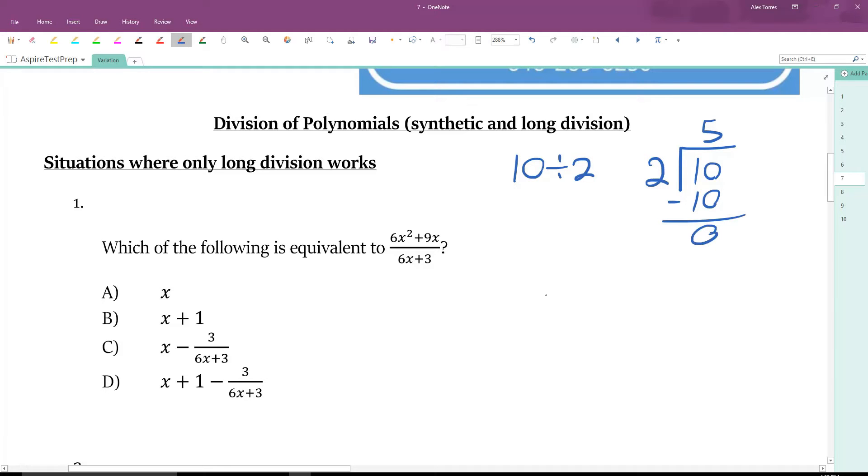We're going to do the same thing with this polynomial. We have 6x squared plus 9x plus 0, because we do want to account for the column that has just a constant with no x. And that's divided by 6x plus 3. The way to do long division in this situation is to ask yourself, how many 6x's would I need to get 6x squared? What do I have to multiply 6x by to get 6x squared? And the answer is x, because 6x times x is 6x squared. Now we can multiply straight down. So x times 6x plus 3 is 6x squared plus 3x.